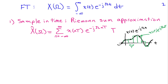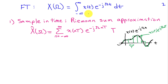The Fourier transform definition is written at the top: capital X of omega is the integral from minus infinity to infinity of x of t, e to the minus j omega t, dt. When we sample in time, we can think of that as yielding a Riemann sum approximation to the integral. The integral is just a way of summing up the area under this function.